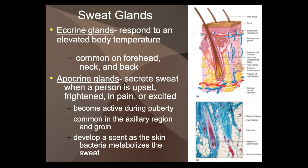Apocrine glands become active during puberty and are common in the armpit area and the groin. They get more active as you get older and have a certain scent because your skin has a certain kind of bacteria that's unique to you — everybody has their own bacteria, so they have a unique scent. We're not always aware of the scent consciously, but we can sense it subconsciously. Studies have shown females can choose male gym shirts over female ones based on scent alone, even without consciously identifying a smell, suggesting chemicals are picked up subconsciously — important for attraction.